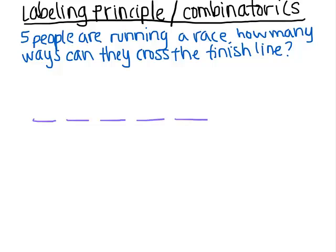I want to know how many ways they can cross the finish line. If I have five people and one of them has to come in first, how many choices do I have for that person to come in first? Well, I would have five choices. Once that person comes in first, how many people are still running? Four. So in order to figure out how many choices I have for second place, that's one less. Two people have already crossed the finish line, so I have three left, then two, then one.